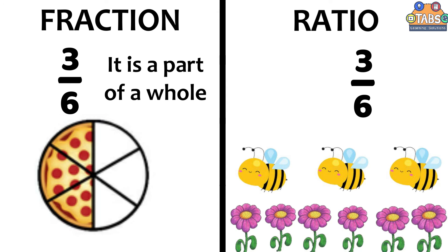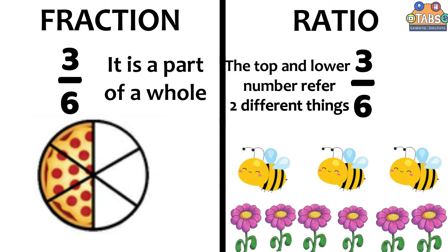While in ratio, there is a relative comparison between the top number and the lower number. The top and lower number refers to different things. Like for this one, three refers to the number of bees and six refers to the number of flowers.